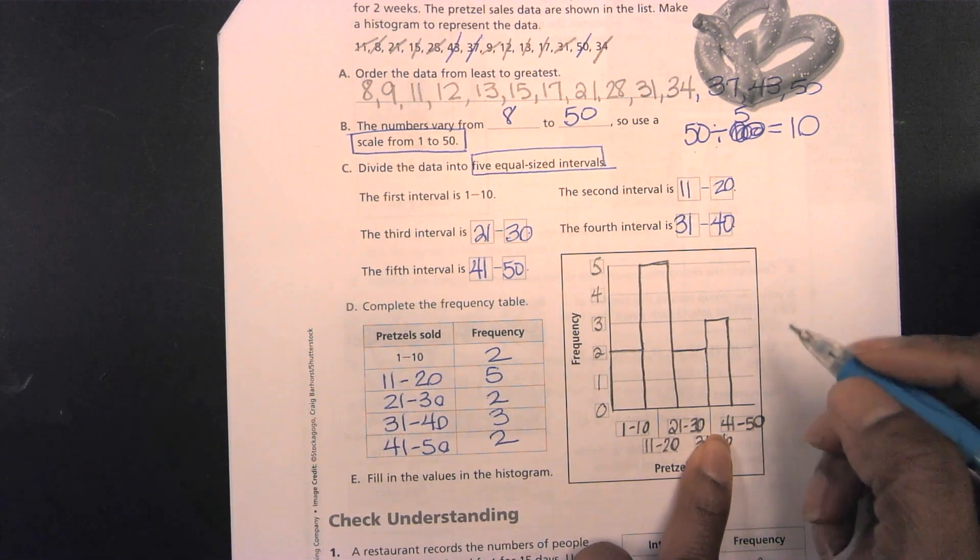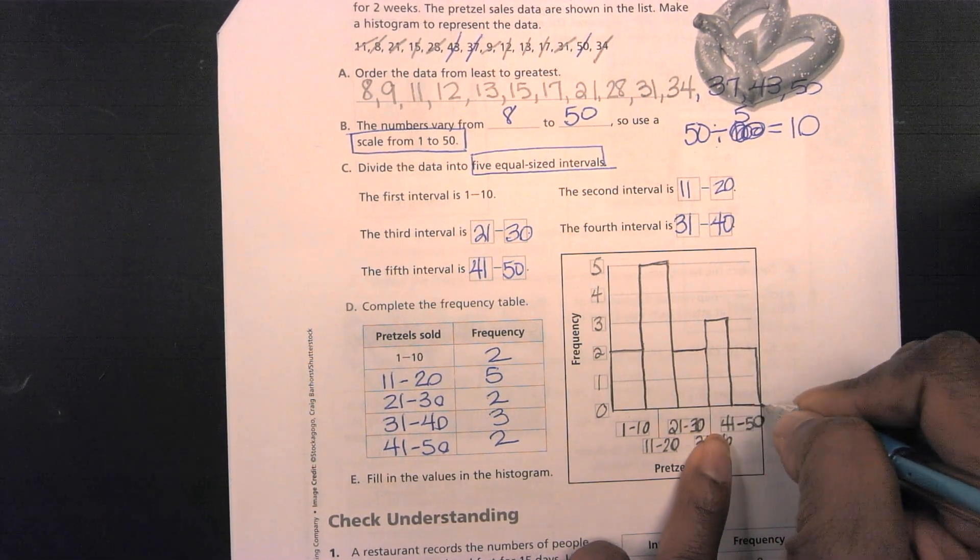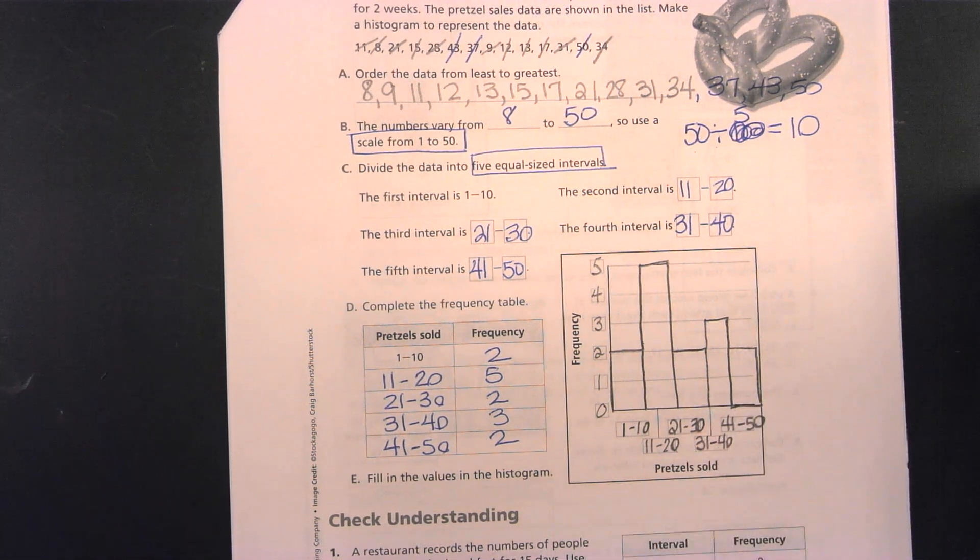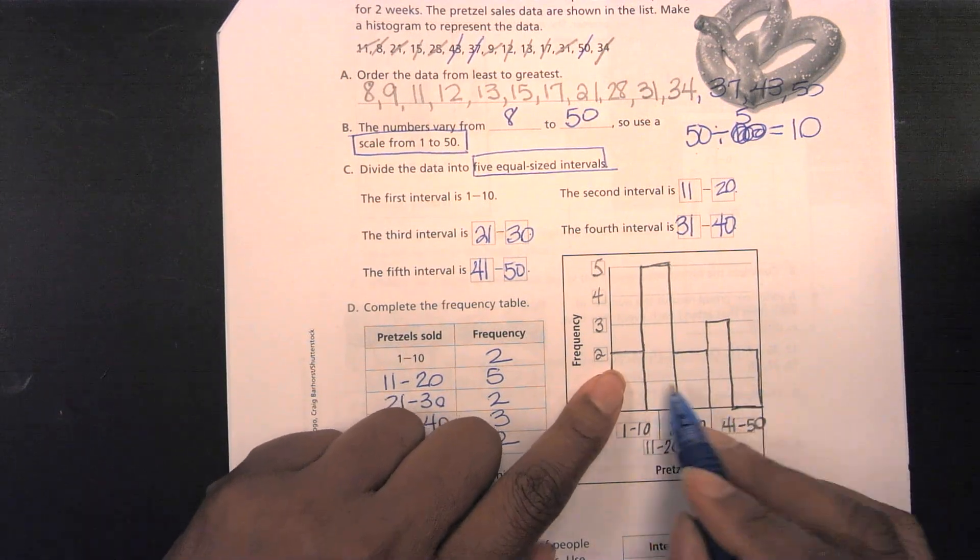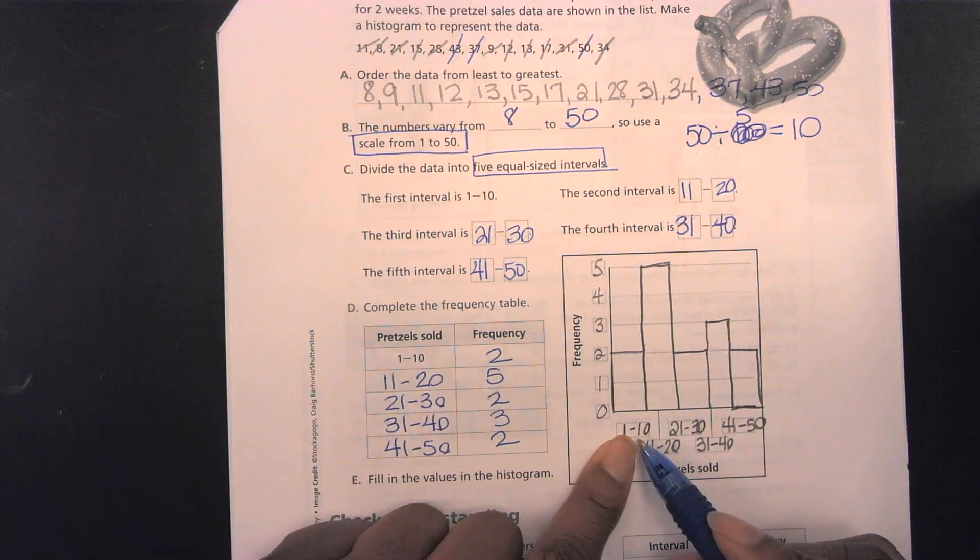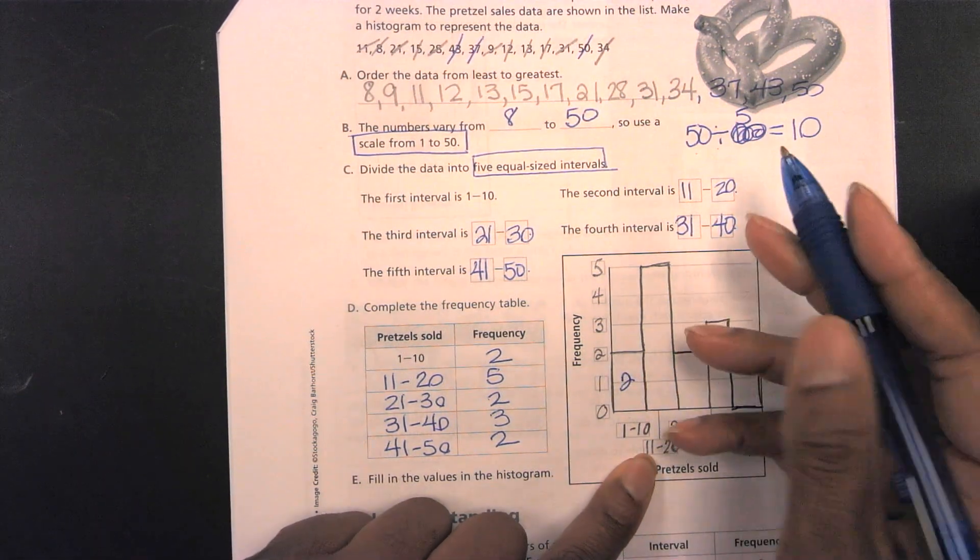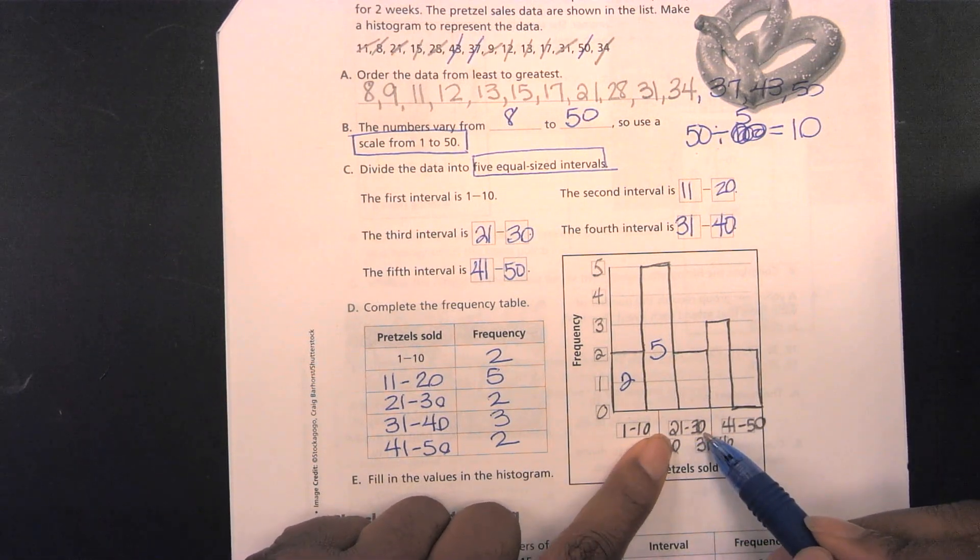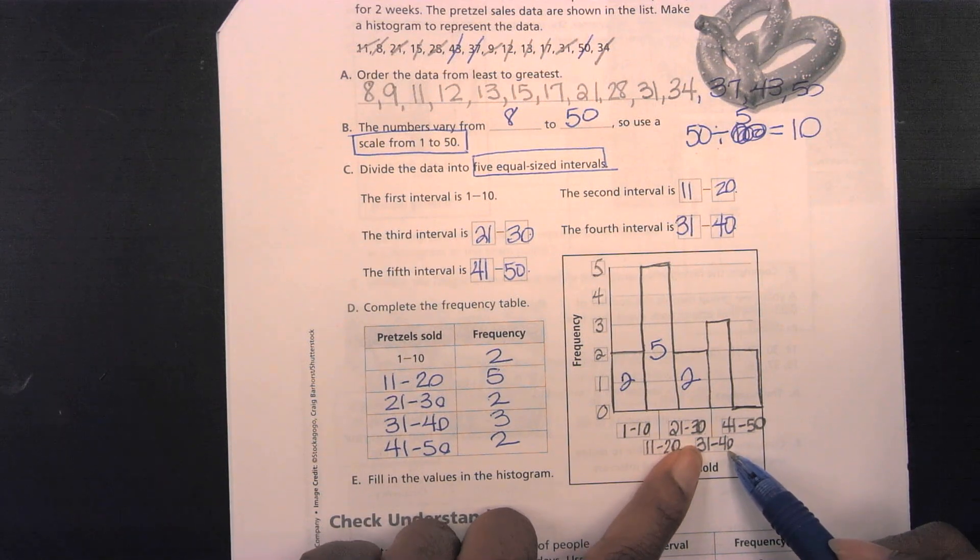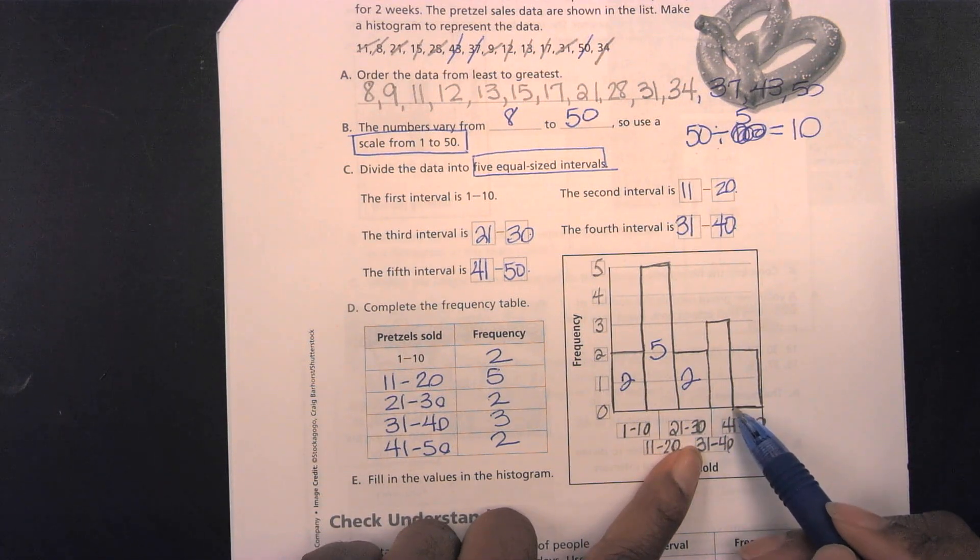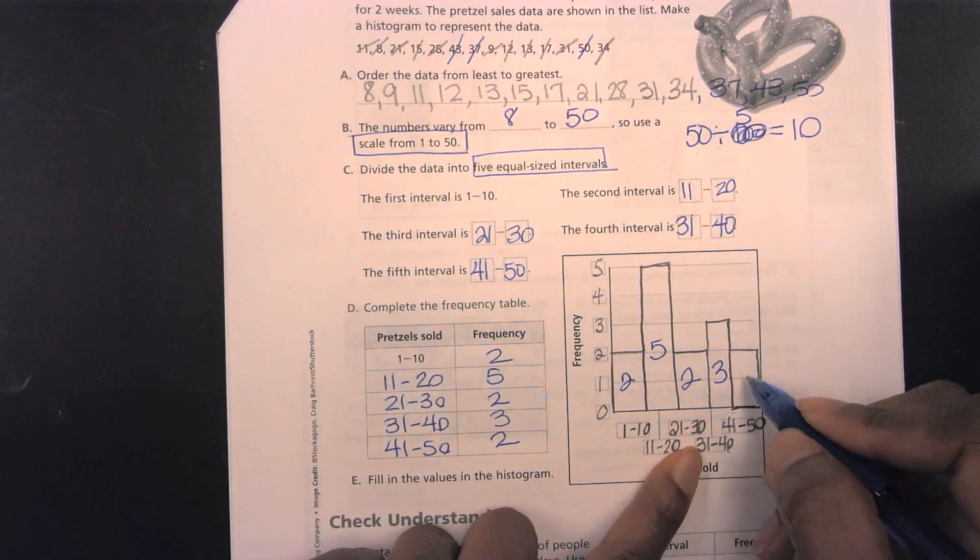Okay, we've done the 21 to 30, now we need to do 31 to 40, which is 3. And then lastly, we have the 41 to 50, which is 2. Now, if you would like, sometime I do this, I would just write what the frequencies are in each box. So, this frequency again, 1 to 10 is going to be 2. The frequency of 11 to 20 is going to be 5. The frequency of 21 to 30 is 2. The frequency of 31 to 40 is going to be 3. And then lastly, 41 to 50 is going to be 2.